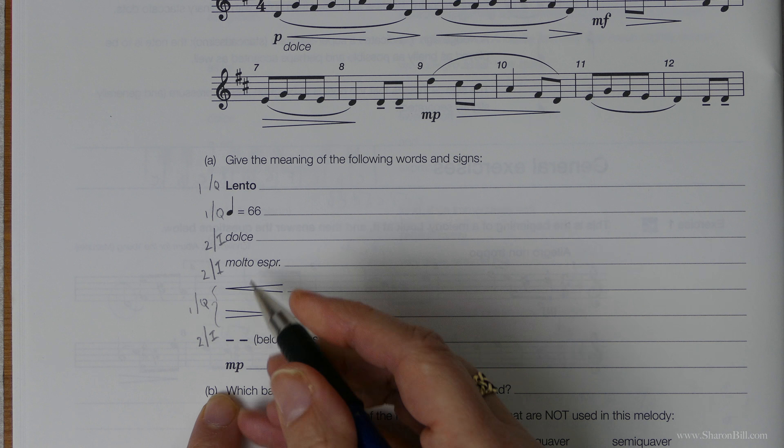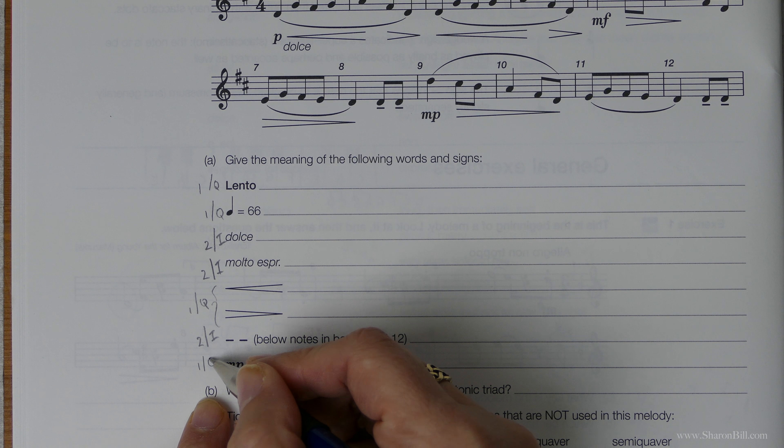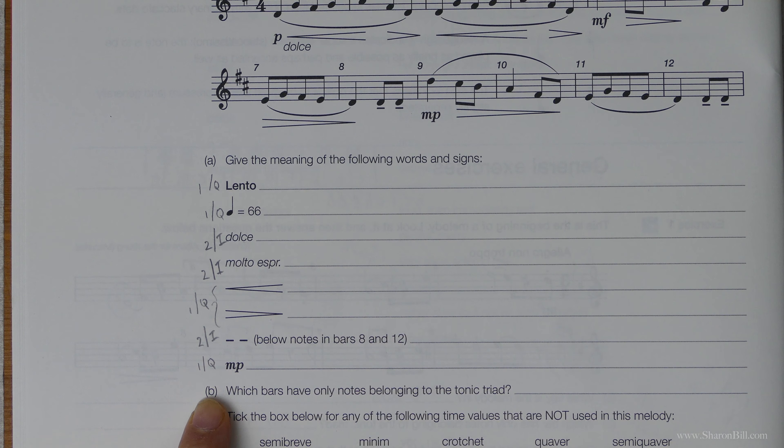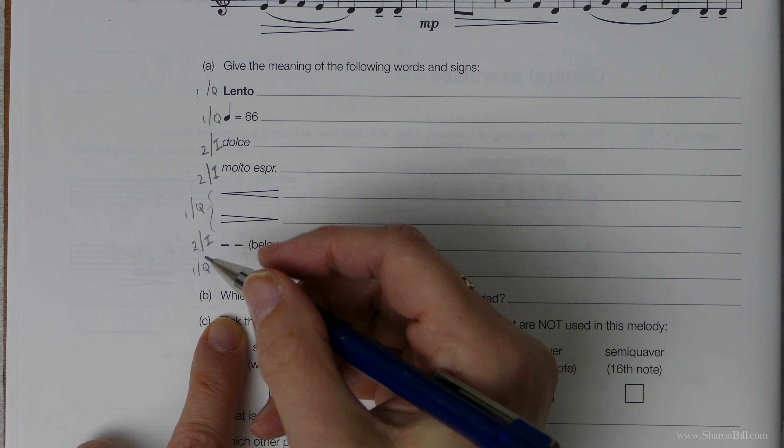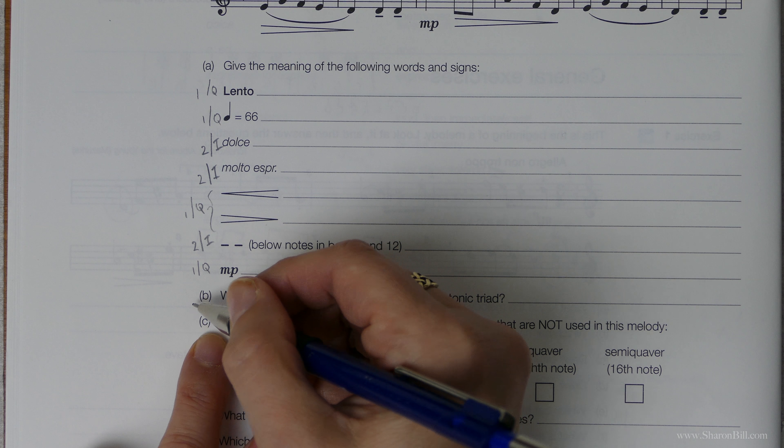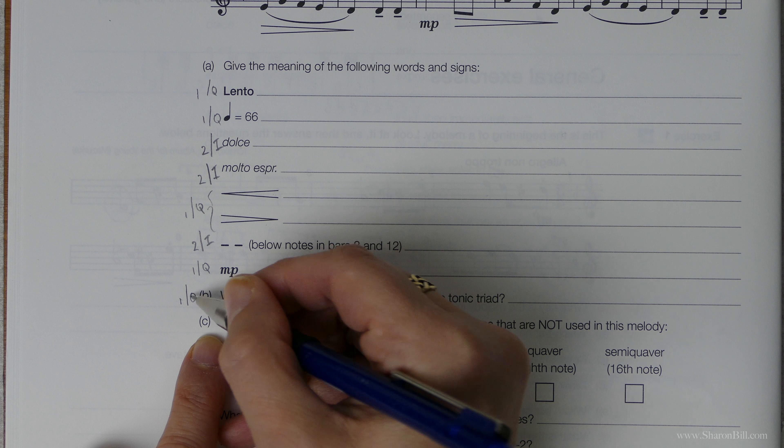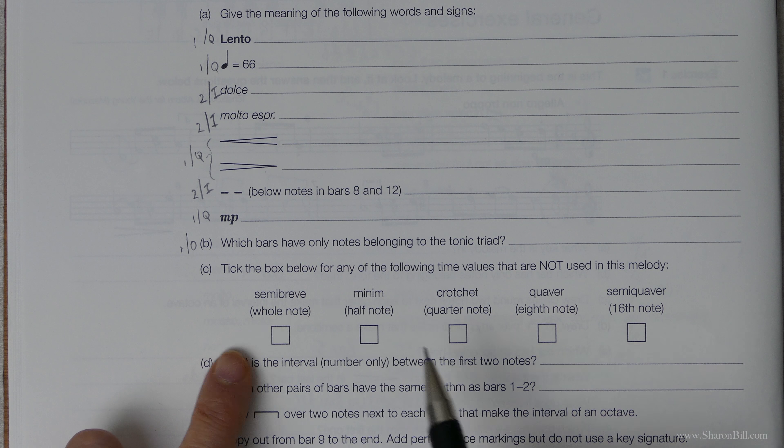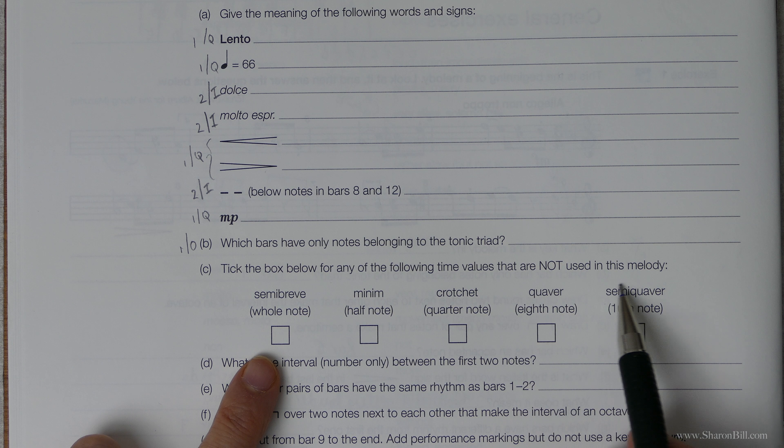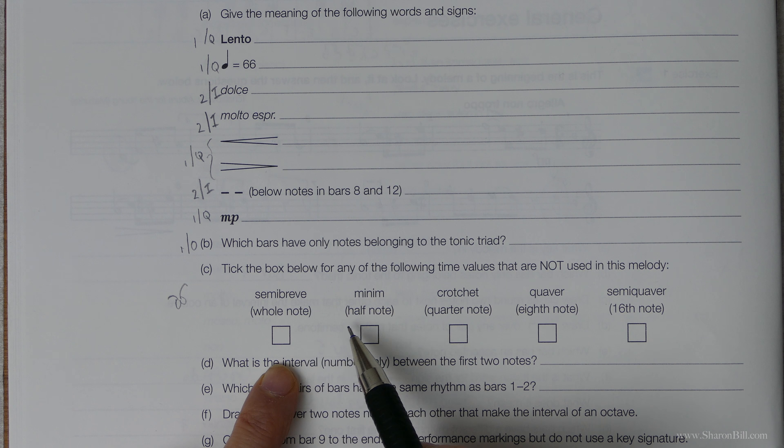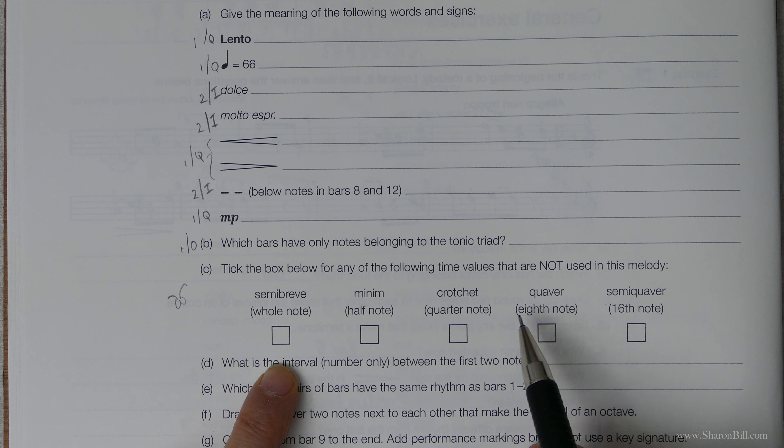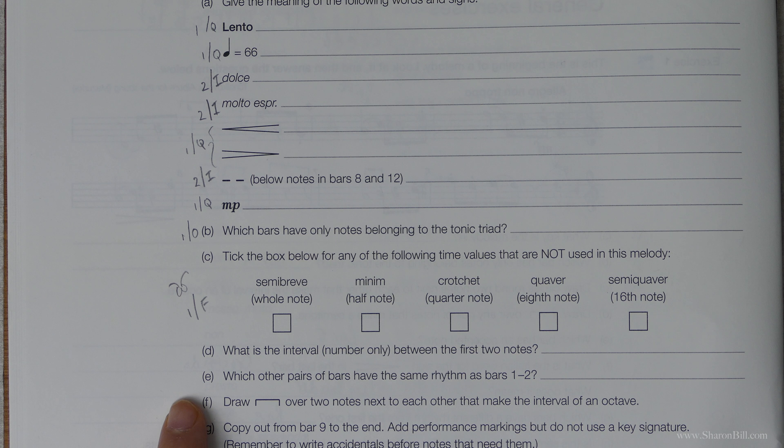These symbols you will find in grade 1 section Q. These symbols you will find in grade 2 section I. MP is in grade 1 section Q. This question which bars have only notes belonging to the tonic triad, that refers to grade 1 section O. Tick the box for any of the following time values that are not used in this melody. So you just need to keep your eyes peeled and if you're not sure what these note values look like, you can see it in grade 1 section F.